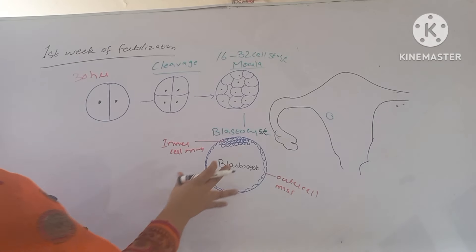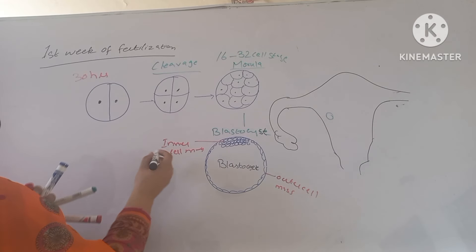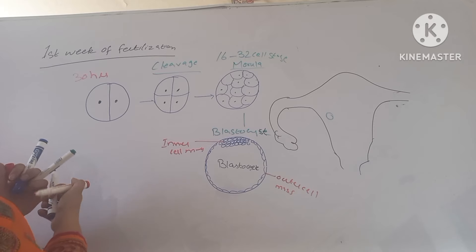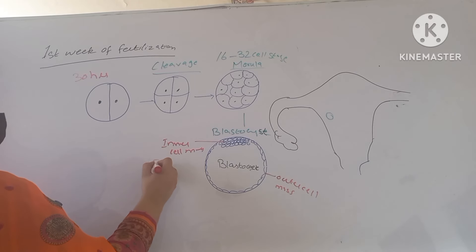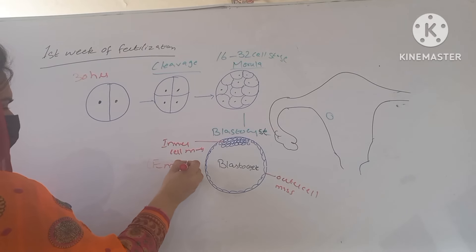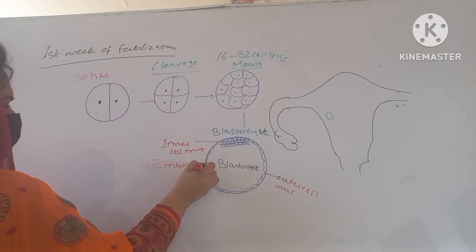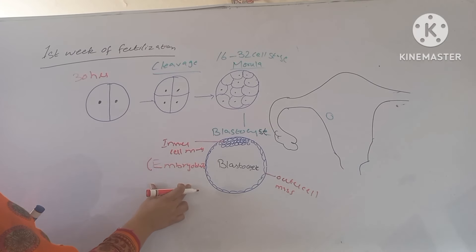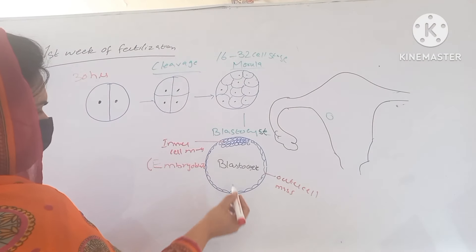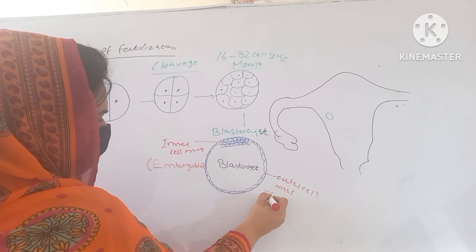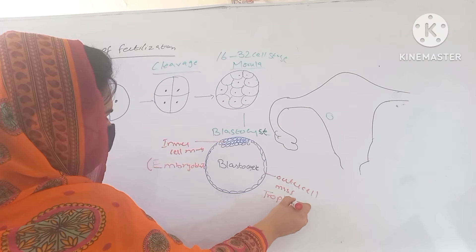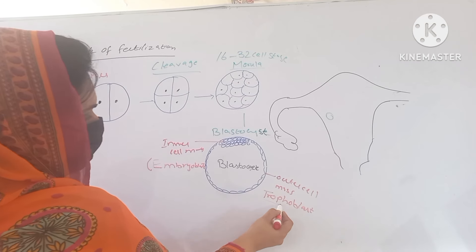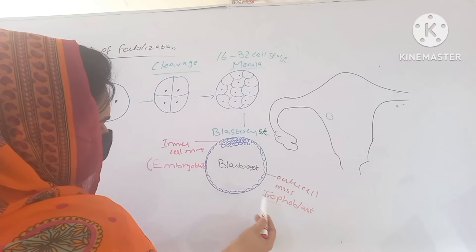After the blastocyst forms, the inner cell mass is also known as the embryoblast. It is known as the embryoblast because it forms the embryo proper. The outer cell mass is also known as the trophoblast, because it is important for the nourishment of the embryo — 'tropho' meaning nutrition.